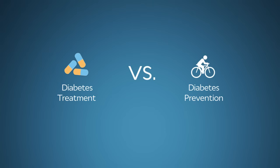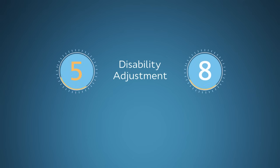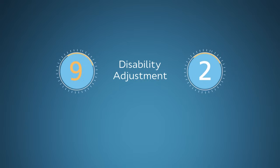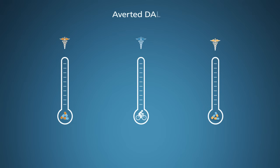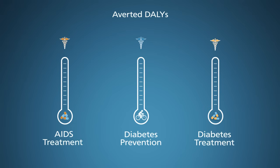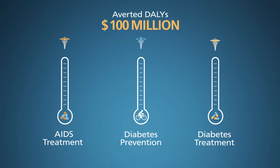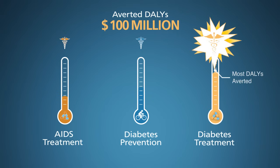You can even use DALYs to tackle the Minister's other challenge: quantifying and comparing different intervention programs to address diabetes. You could calculate the number of DALYs a particular diabetes treatment program averts, perhaps by extending life or reducing the length or severity of morbidity. You can then compare that result with the number of DALYs averted by another program, perhaps focused on diabetes prevention through nutritional counseling. Then, by factoring in the potential $100 million in new funds and the coverage those funds allow for each intervention program, you can extend your analysis into a basic cost-effectiveness analysis.